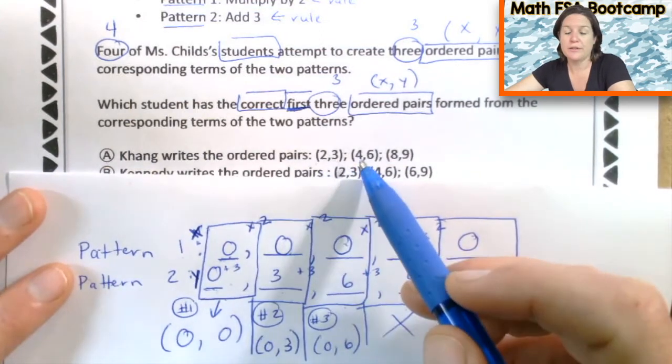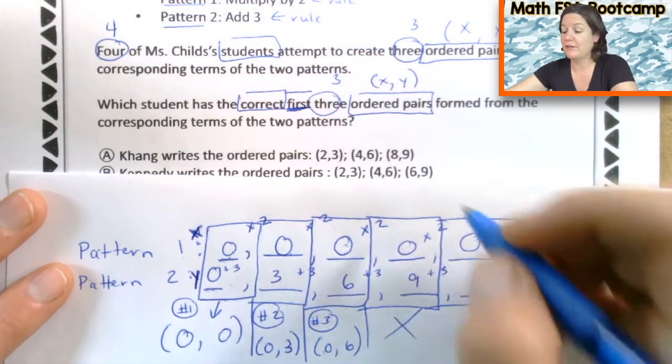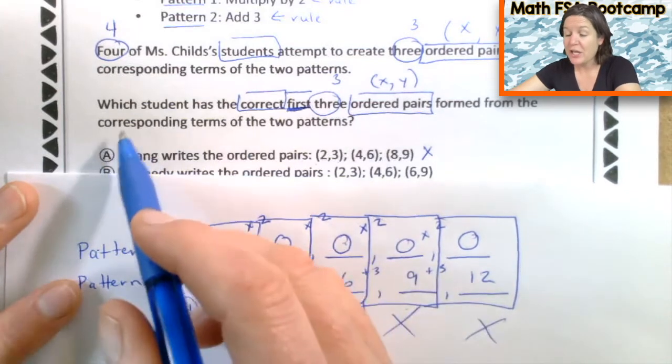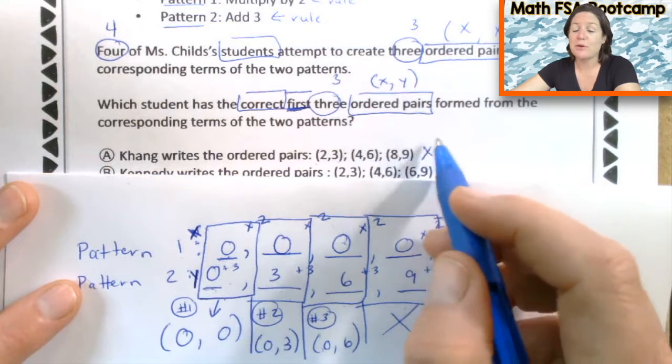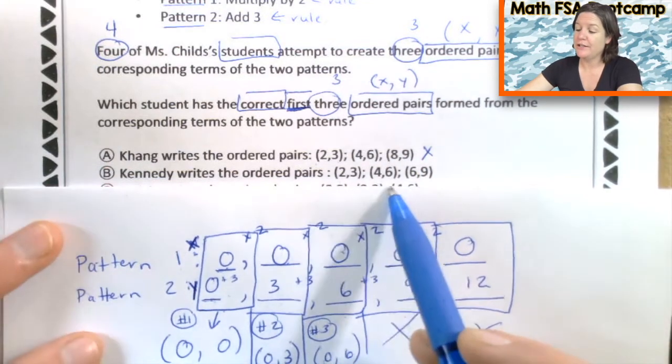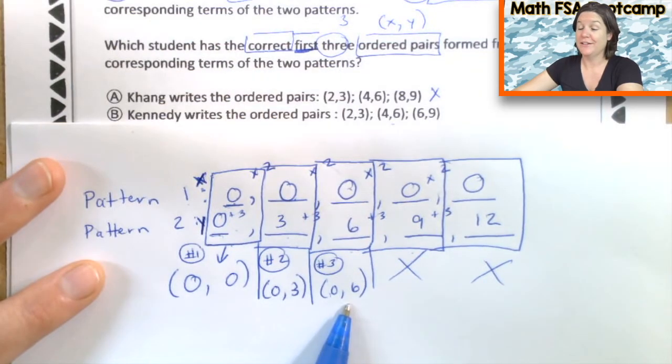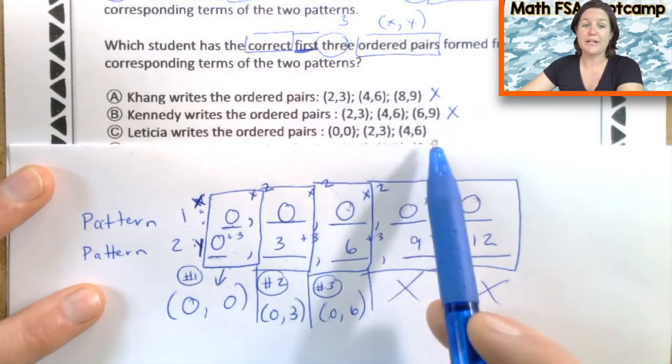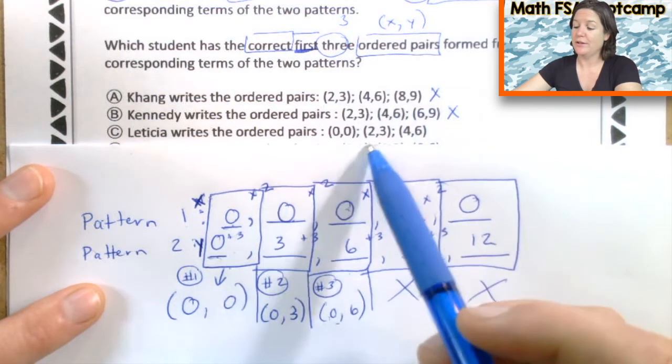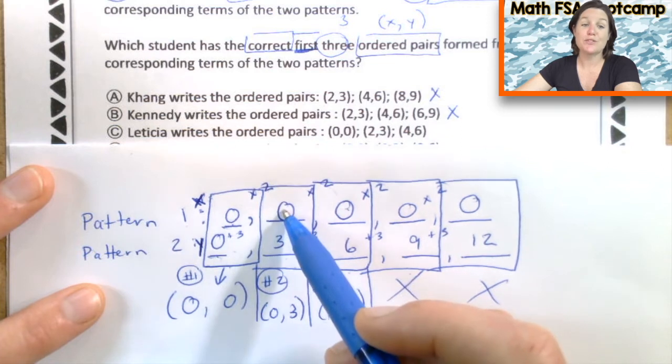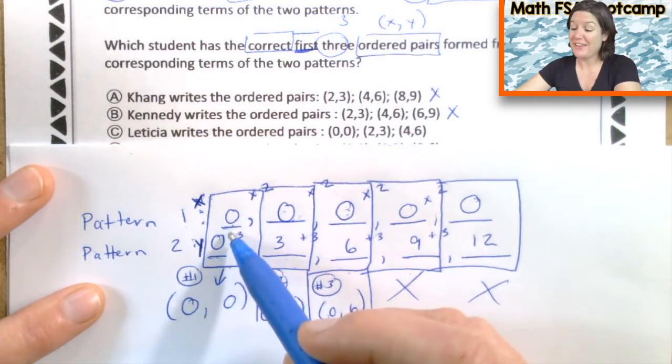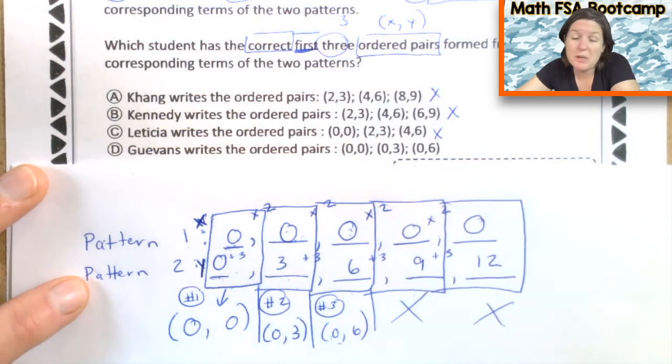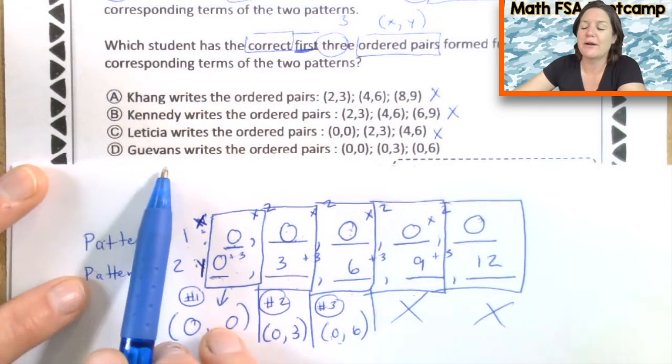Okay. So Kang said (2,3), (4,6), (8,9). That's not what we have right here. So let's eliminate it over here. Not on top of the A because then the computer that's scanning your test is going to say, oh, you meant to pick A, you are wrong. No, we didn't. We meant to eliminate A. That's why we put our X over here. Kennedy writes the ordered pairs (2,3), (4,6), and (6,9). Are those the ordered pairs that we have down here? They are not. We're going to eliminate there. Leticia writes the ordered pairs (0,0), (2,3), and (4,6). Close. I think this student may have, when they multiplied it, that zero times two was two, two times two would be four. And that would have gotten you there. But remember that anything times zero is zero. So this would have been wrong. So let's just go ahead and pick D then, because you know, all the other ones were wrong. So we'll just pick D without reading it. No, we always read it.